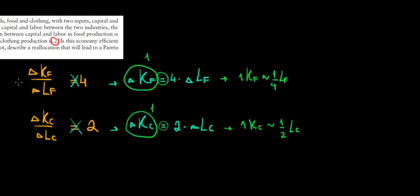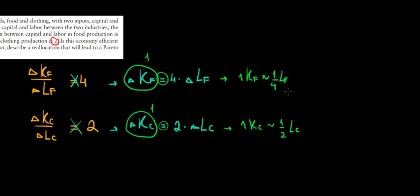We can see that both companies value labor more than capital at this point — the food company is willing to exchange only 1/4 unit of labor for one unit of capital, and the clothing company only 1/2 unit. Comparing them, the food company values labor more than the clothing company does, because 1/4 is less than 1/2 — the food company is less willing to give up labor.